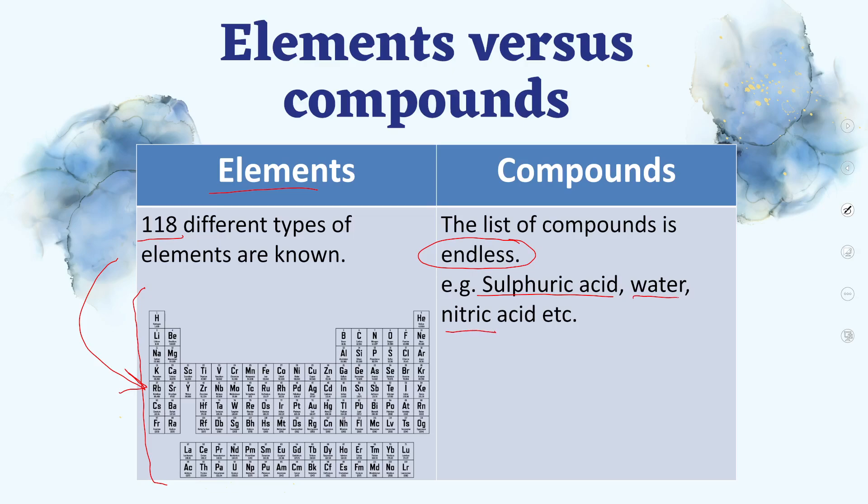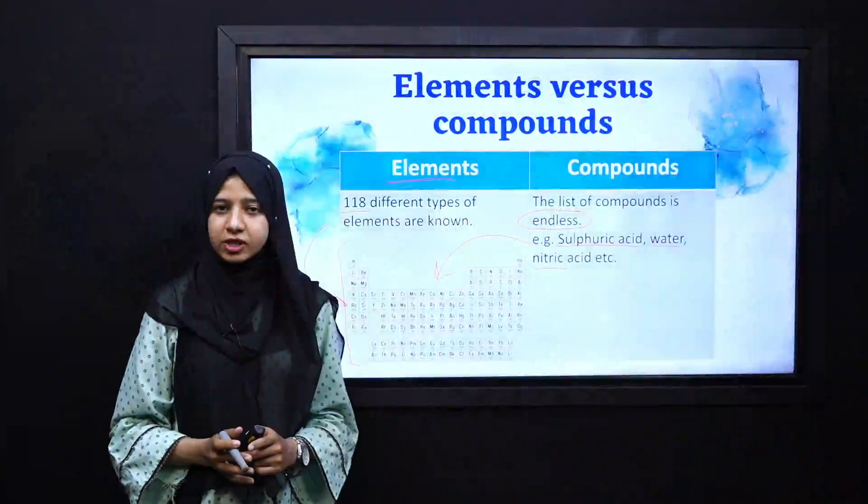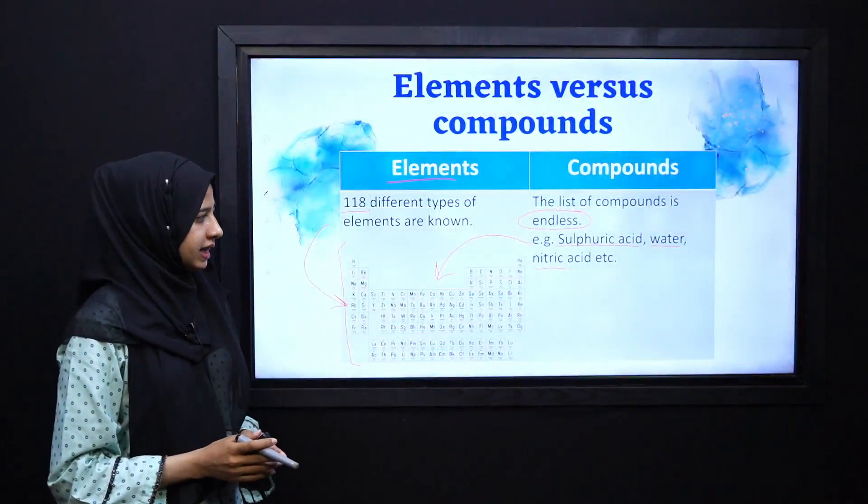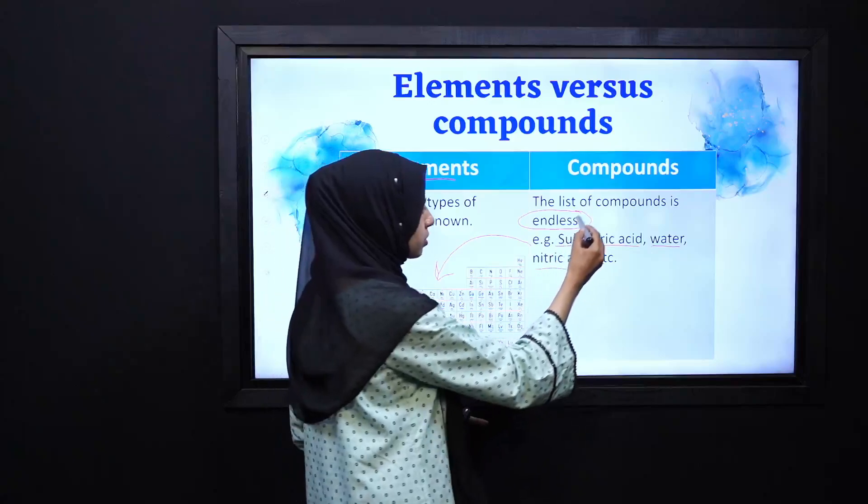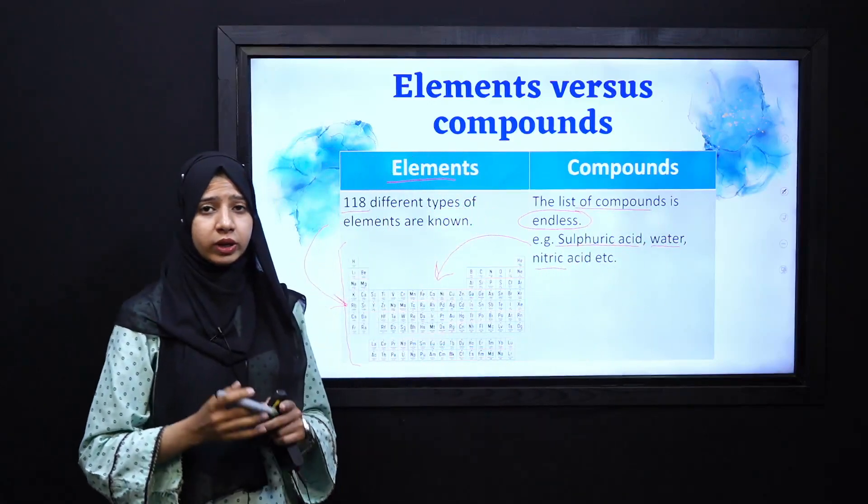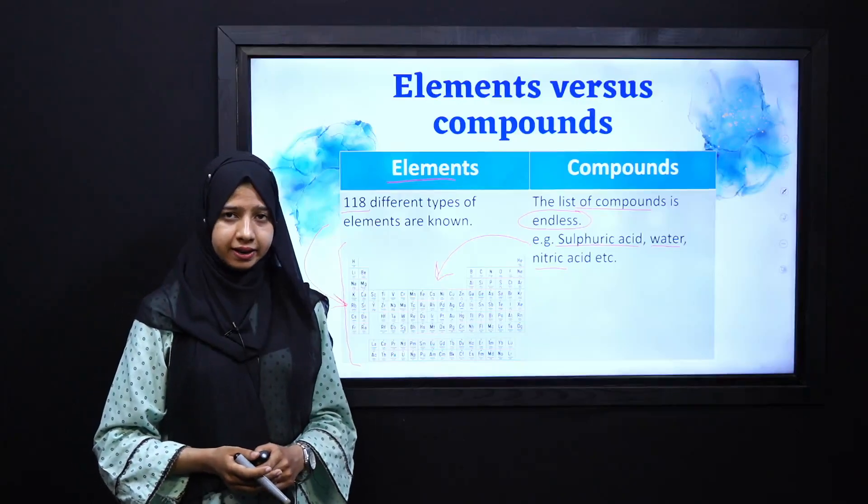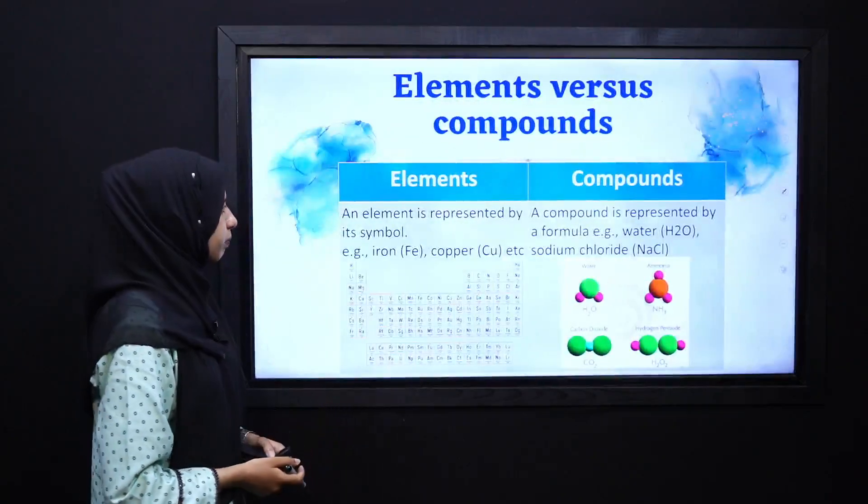Iske ilaawa, humare paas variety of compounds hain, jo ke inhi elements ke combination se, wujud mein aate hain. Isi liye, hum agar compounds ki numbering ki baat karen, amount ki baat karen, toh we consider that compounds are endless. There are variety of compounds.